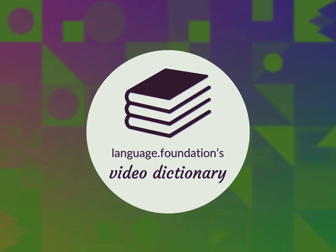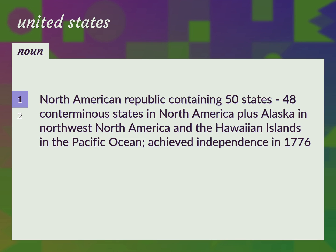Language.Foundation's Video Dictionary, helping you achieve understanding. North American Republic containing 50 states: 48 contiguous states in North America, plus Alaska in Northwest North America and the Hawaiian Islands in the Pacific Ocean. Achieved independence in 1776.